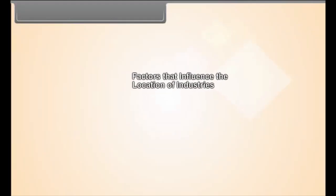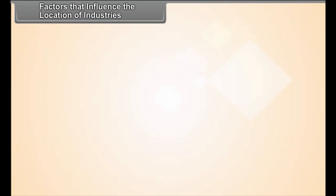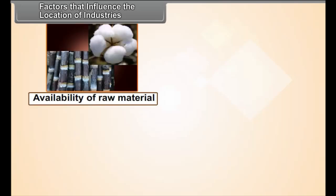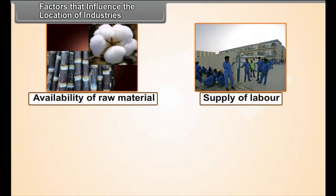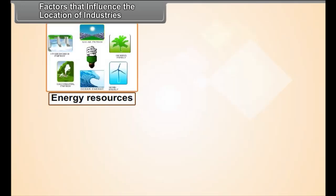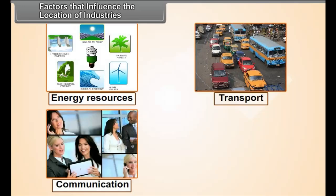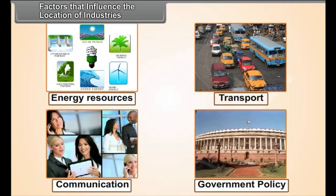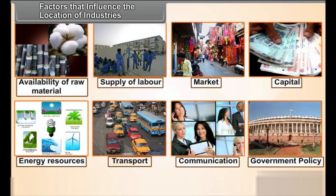Factors that influence the location of industries: availability of raw material, supply of labor, market, capital, energy resources, as well as facilities of transport and communication, and government policy are the factors that influence the location of industries.